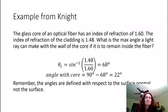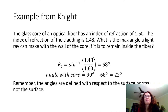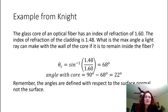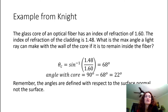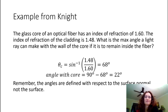One more example: the glass core of an optical fiber has an index of refraction of 1.6 and the cladding is 1.48. What's the maximum angle a light ray can make with the wall of the core to remain inside the fiber? θc = arcsin(1.48/1.6) = 68 degrees. But the problem asks for the angle with the core wall, not the surface normal, so you must do 90° − 68° = 22 degrees. Remember, Snell's law angles are always defined with respect to the surface normal, not the surface itself.